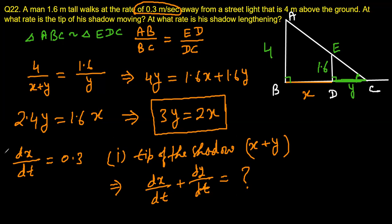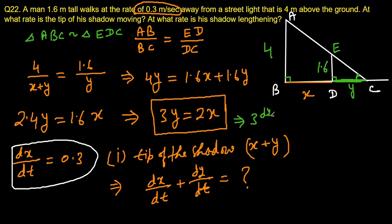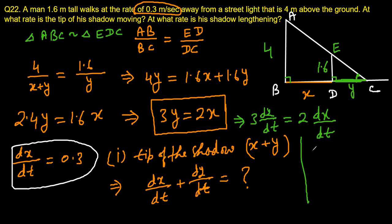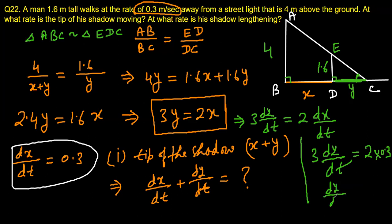From the relation 3y = 2x, differentiating with respect to time gives 3(dy/dt) = 2(dx/dt). Since dx/dt = 0.3, we get 3(dy/dt) = 2 × 0.3 = 0.6. Therefore dy/dt = 0.2 meters per second.